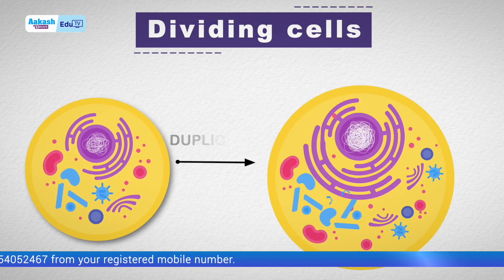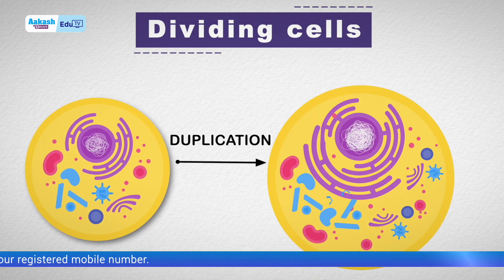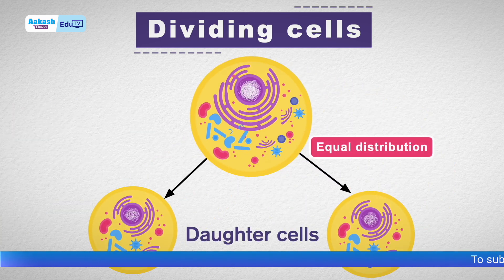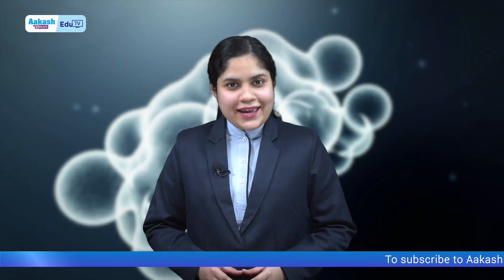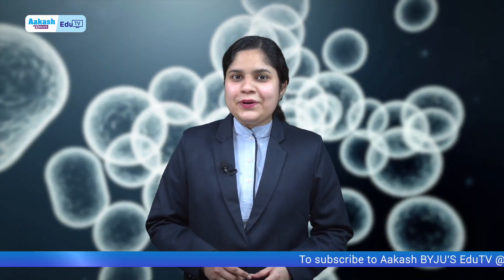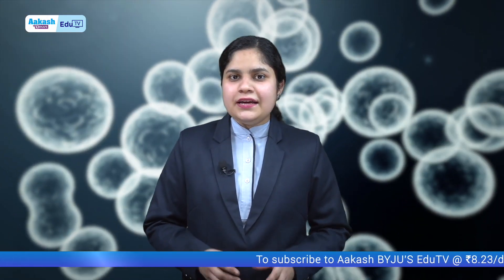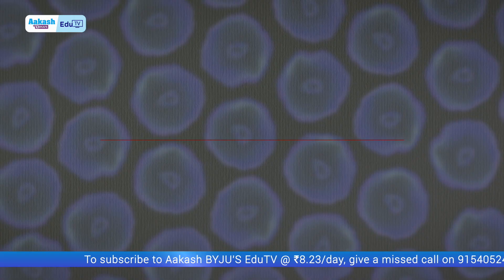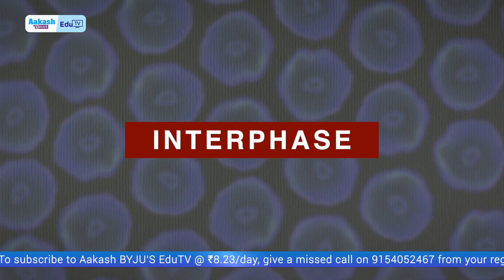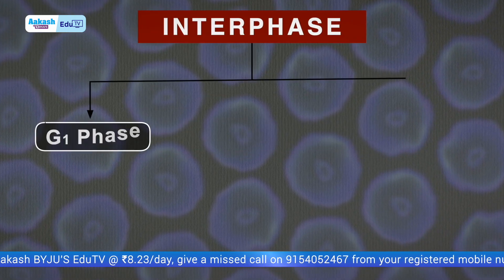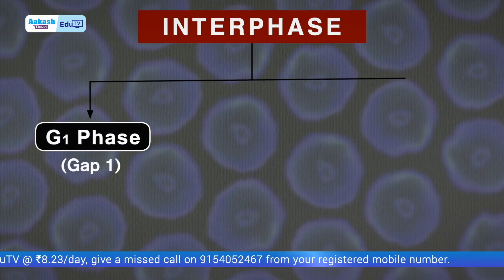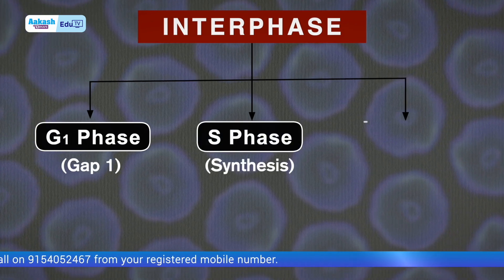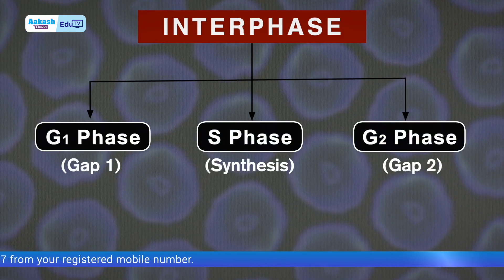It is important to duplicate the cell contents so they can be distributed equally into two daughter cells. There are three sub-phases in interphase. First, GAP1 phase or G1 phase. Second, S or Synthesis phase. And third, GAP2 or G2 phase.